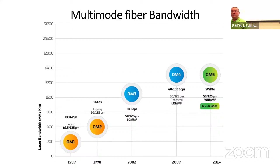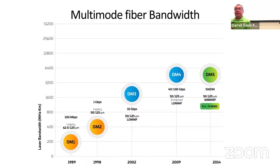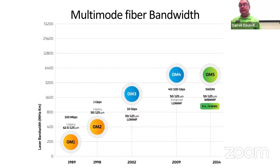So how fast can we go? Multi-mode fiber bandwidth: we started in 1989 at 100 megabits per second, up to 1 gigabit per second in 1998, 10 gigabits per second in 2002, up to 100 gigabits in 2009, and by 2014 we're up even higher — but we're using four different wavelengths to achieve that.